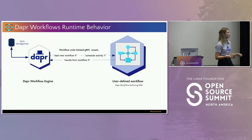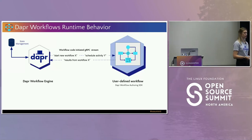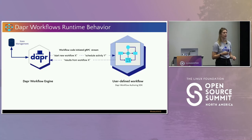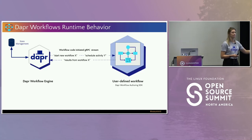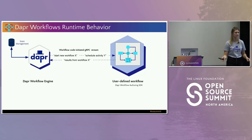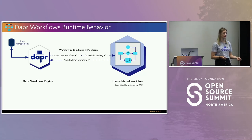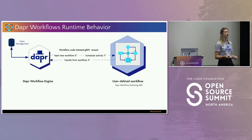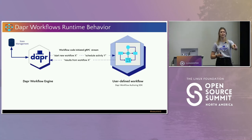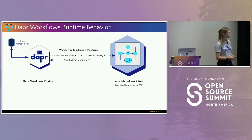The gRPC stream initiated from your application code first gets a series of commands from the engine — things like schedule this workflow or schedule this activity on behalf of a particular workflow instance. In order to track state of completion, your application code reports back the results. The engine is telling the application what to do, the application code is executing and returning the results.